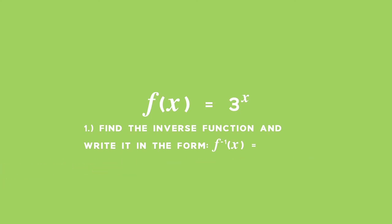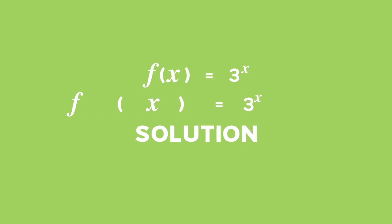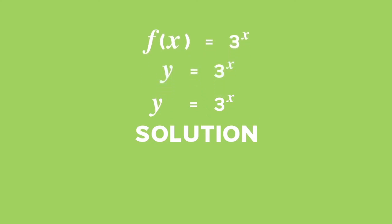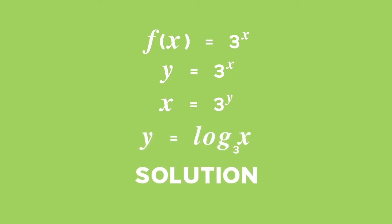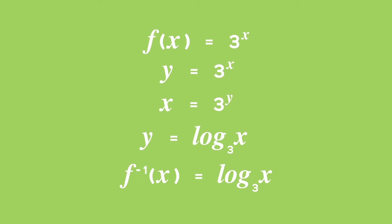To answer part 1, we start by noting that we can rewrite f of x equals as y equals 3 to the power of x. Next, swap the x and y values of the given function and you get x equals 3 to the power of y. Then, make y the subject of the new equation by changing from exponential to log form, so we get y equals log x base 3. Rewrite it using function notation, replacing y with f inverse of x.